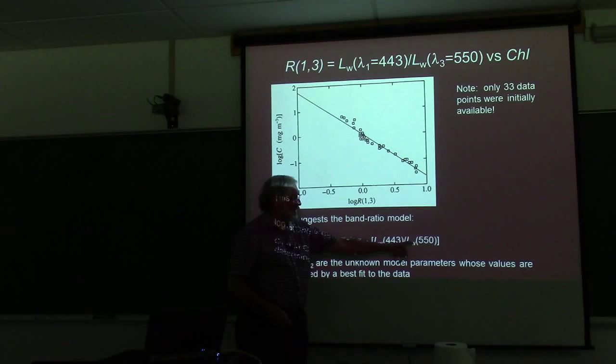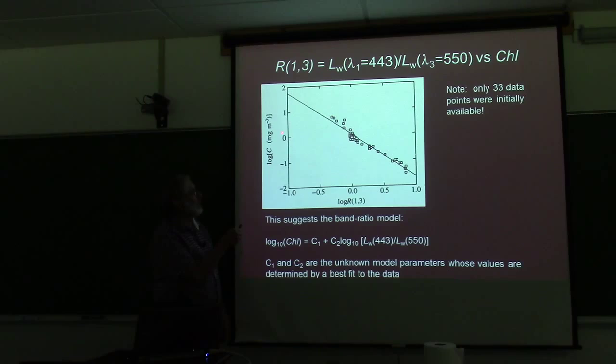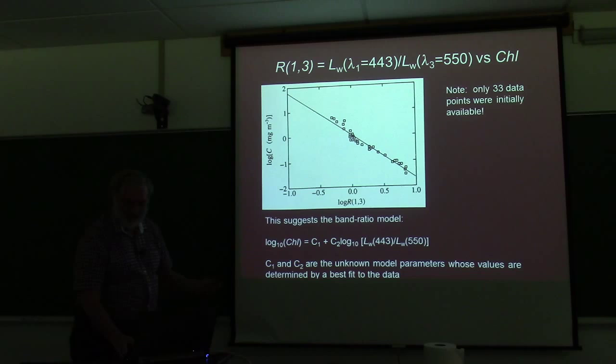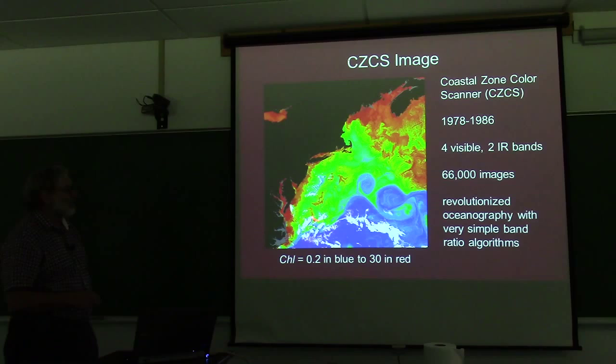So now with a simple formula: take the radiance ratio at 443 to 550, plug into the formula, and you get a chlorophyll value. And a formula this simple, with only 33 data points, was the basis for justifying the CZCS satellite — proving we really can do this. With just 33 data points, they started the whole process of ocean color remote sensing, generating images that completely blew everybody away.